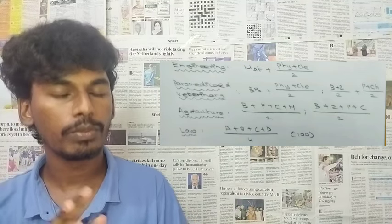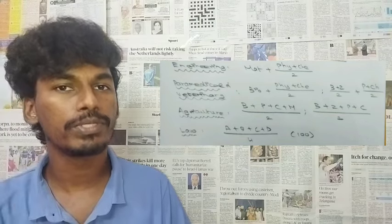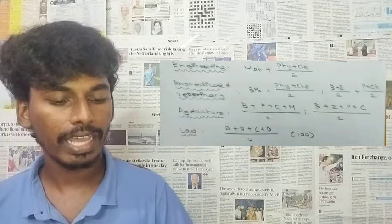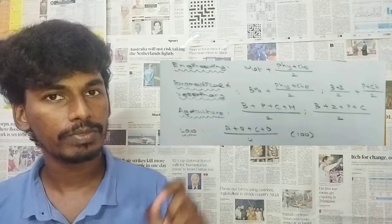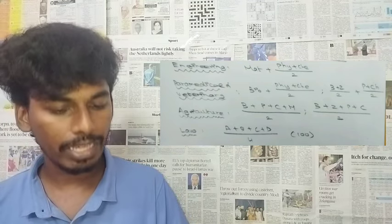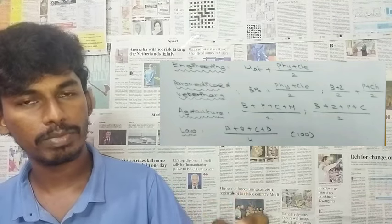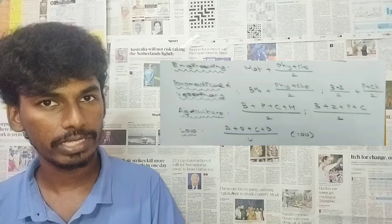You can apply for paramedical counseling in pure science group. If you have agriculture group: Biology plus Physics plus Chemistry plus max, divided by 2. If you have computer science group: Biology plus Computer Science plus Physics plus Chemistry, divided by 2.